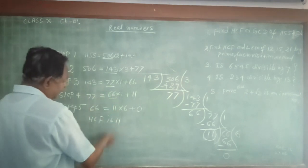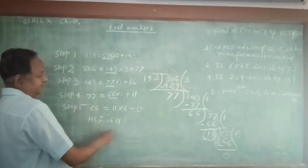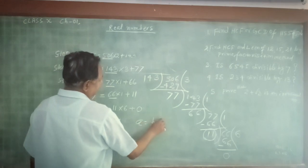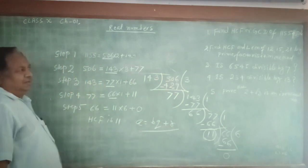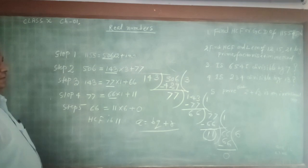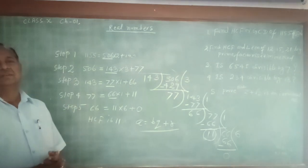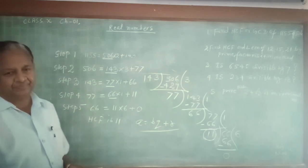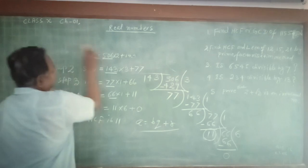So we have followed Euclid's division lemma as: A is equal to BQ plus R. Hence, we find out the HCF or GCD of the given two numbers. Now take another question.